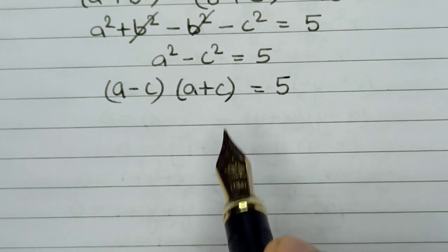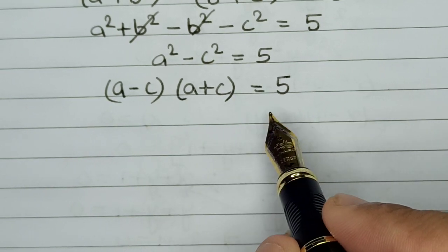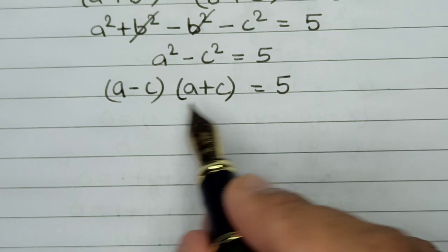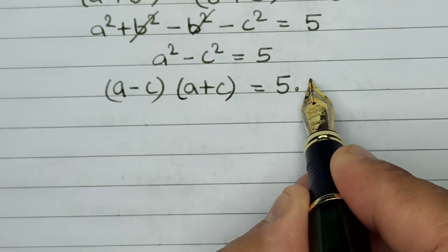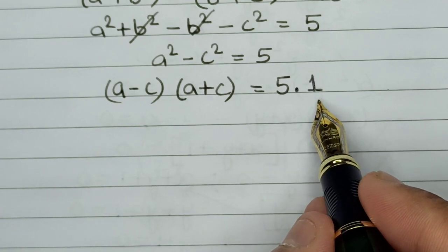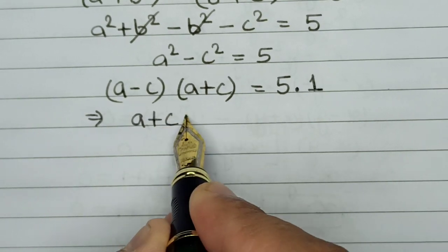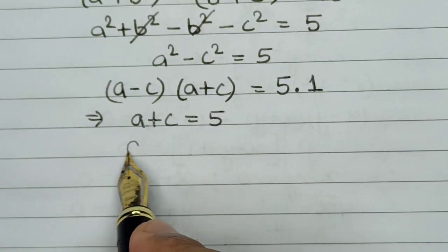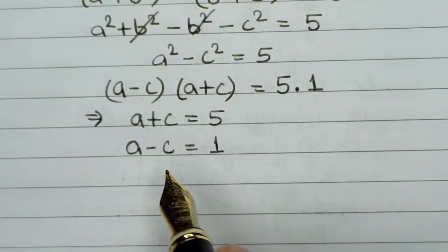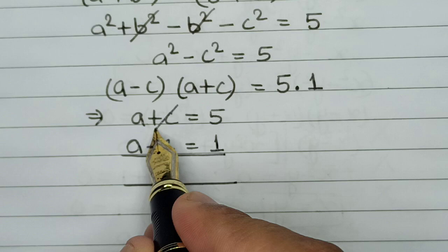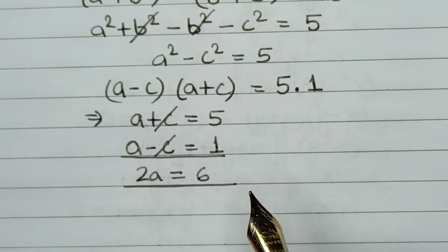Now here you can clearly see that since a, b, and c are integers, this 5 has to be a product of two integers. So this 5 is written as 5 × 1. That means we can take a + c = 5 and a - c = 1. On adding these two equations, c gets cancelled out, so we have 2a = 6, which gives us a = 3.